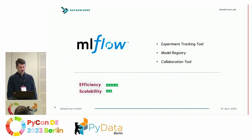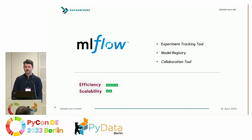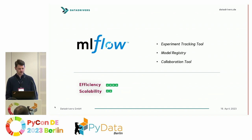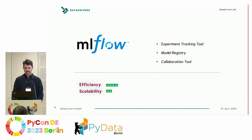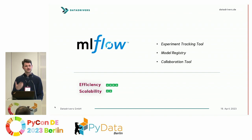The first tool is MLflow — some of you may already be working with it. We think it's a very good tool. It's open source, you can deploy it in your own cloud environment, and you can do a lot with it. It's an experiment tracking tool that allows you to compare different experiment runs: different feature sets, different hyperparameter tunings, or even training different models, comparing those runs, and deciding which results to put into production.